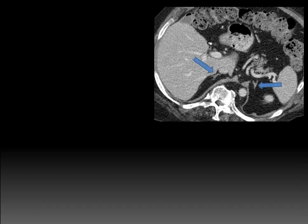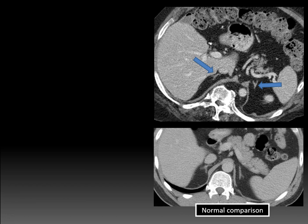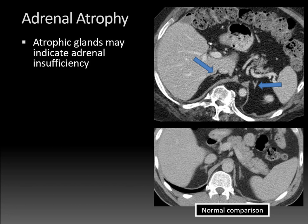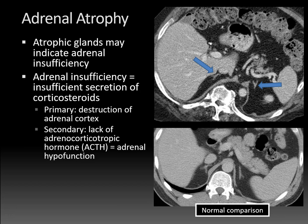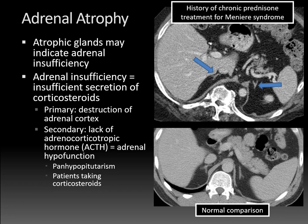Looking at another case: the bilateral adrenal glands are rather small in size, with normal configuration but reduced dimensions compared to a normal study. This is a patient with adrenal atrophy. Atrophic adrenal glands may indicate adrenal insufficiency — insufficient secretion of corticosteroids. The primary type is due to destruction of the adrenal cortex, seen after adrenal hemorrhage or infection. The secondary type is caused by a lack of ACTH, leading to adrenal hypofunction, as in panhypopituitarism, Sheehan syndrome, or patients taking corticosteroids. This patient had a history of chronic prednisone treatment for Meniere syndrome — a secondary adrenal atrophy.